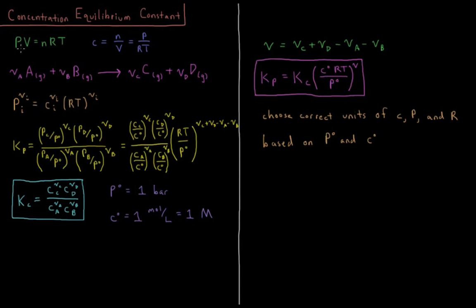For the ideal gas law we have PV = nRT: pressure times volume equals number of moles times gas constant times temperature. The concentration of a gas is equal to the number of moles divided by the volume, which equals pressure over gas constant times temperature (P/RT), according to the ideal gas law.